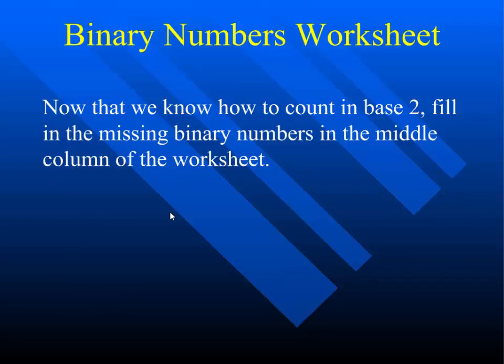When writing numbers in binary, you include the preceding zeros, because remember these are switches. So you don't just write 1 — you write 0, 0, 0, 1. Assume there are four switches, and see if you can figure out the pattern.